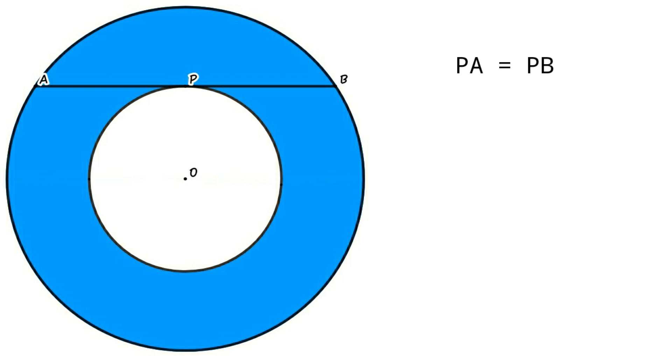Because AB is the chord of the bigger circle, PB equals AB by 2. PB equals 5 cm.